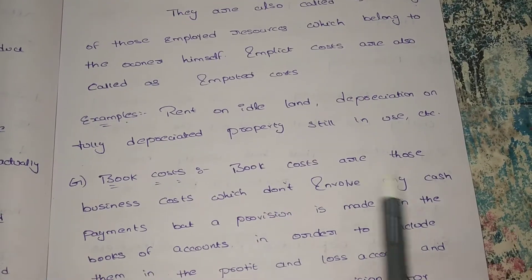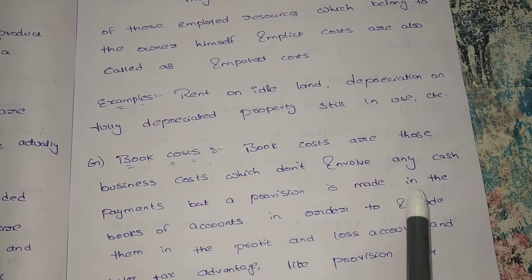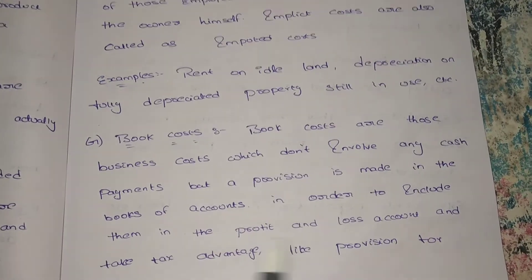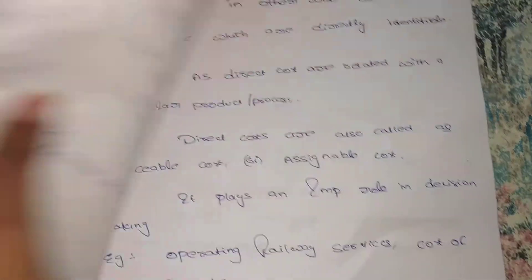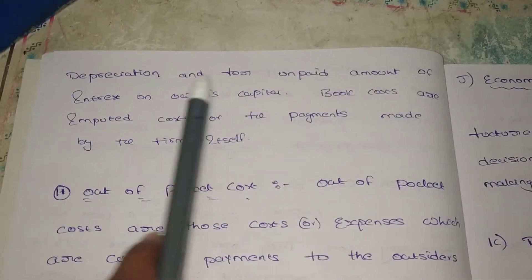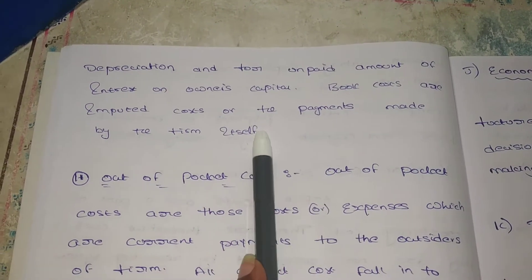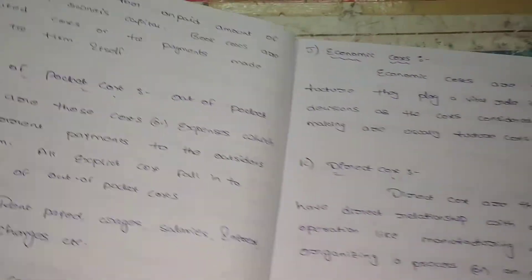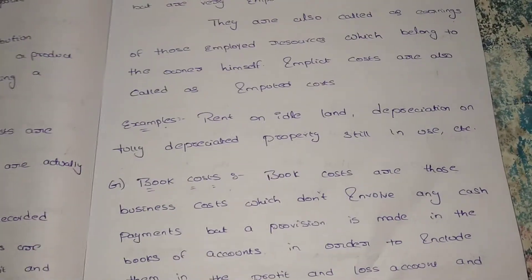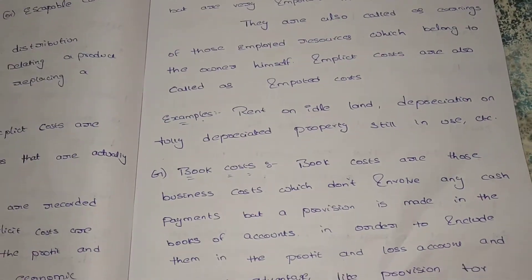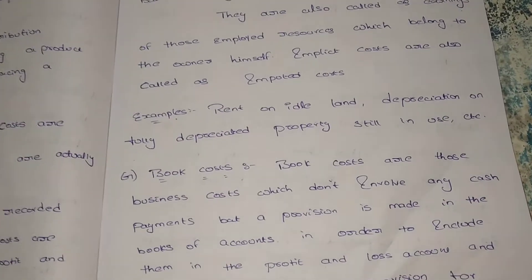Next, what is book cost? Book costs are those business costs which do not involve any cash payments, but a provision is made in the books of accounts in order to include them in the profit and loss account for tax advantages — like provision for depreciation, unpaid amount of interest, and owner's capital. Book costs are imputed costs — payments made by the firm itself. Maybe in our business we may get losses, so we create provision for doubtful debt. These types of costs come under book cost.